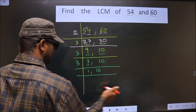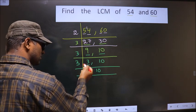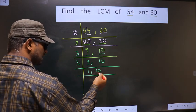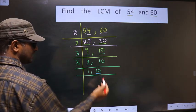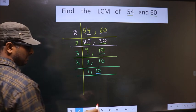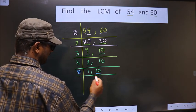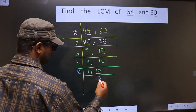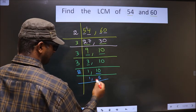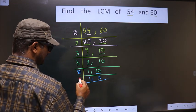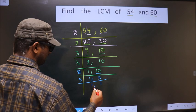Now here we have 1 on one side. So now we focus on the other number, that is 10. 10 is 2×5. Now 5 is a prime number, so we take 5. Once 5.